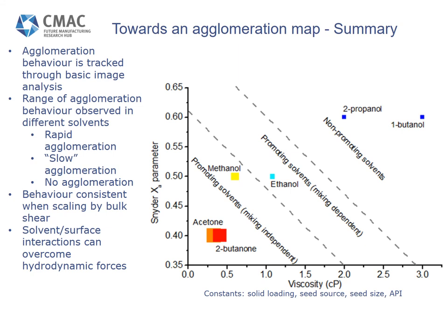Some future work and other considerations with this agglomeration map: this is only part of the story, as it has no input from particle properties. Evidence shows that seeds and crystals produced from different sources can influence agglomeration behaviour — for example, particles produced through dry ball milling behave very differently to those produced through wet milling. Additionally, the parameters identified here in terms of viscosity and the Snyder parameter are very specific perhaps to just paracetamol, so we'll look to broaden the study and identify parameters which work across a range of different APIs.